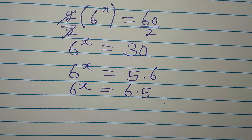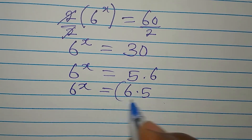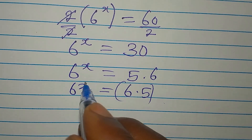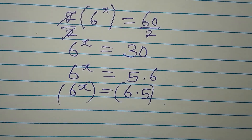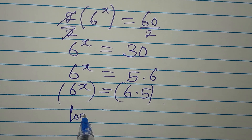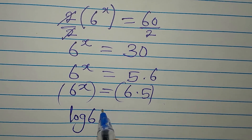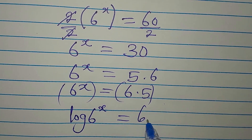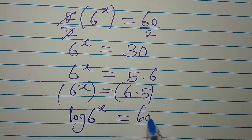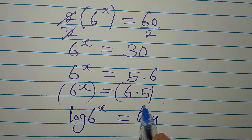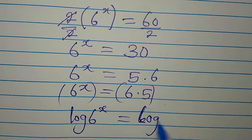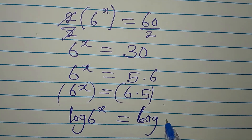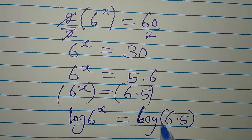Since we cannot proceed directly from here, we need to take the log of both sides. So we take log of 6 to the power of x equals log of 6 times 5.